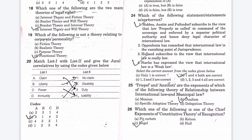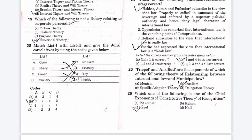The next question: which of the following is not a theory relating to corporate personality? The functional theory does not relate to corporate personality. The other options — fiction theory, realist theory, and purpose theory — do relate to corporate personality.